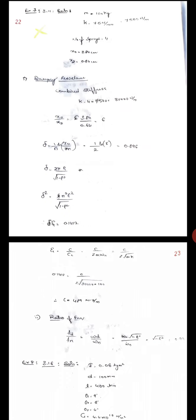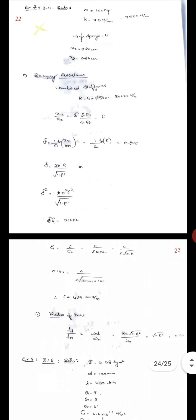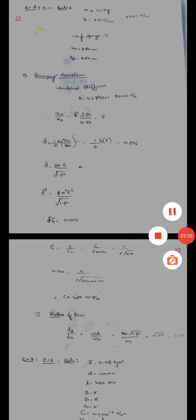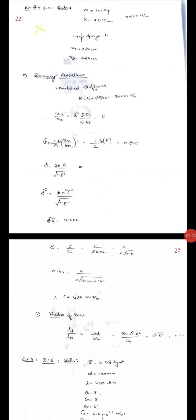Using the logarithmic decrement formula for n number of cycles: delta equals 1 by n ln of x0 by xn. So delta equals 1 by 2 ln of 6, which equals 0.896.